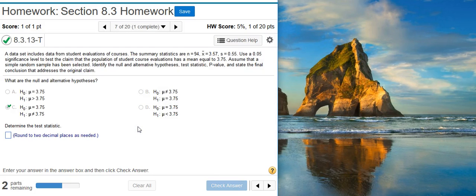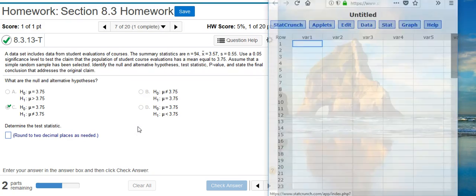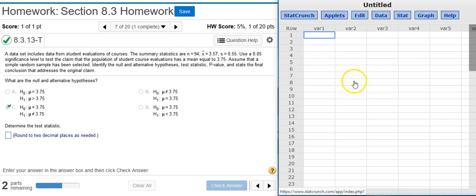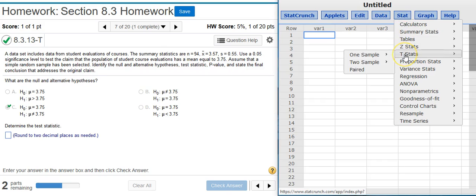Now the second part of the problem asks us to determine the test statistic. To do that, I'm going to pull up StatCrunch, because statistical software like StatCrunch makes hypothesis testing really easy. To get the test statistic, I'm first going to go into Stat, T-stats, because I don't know what the population standard deviation is. I do have a sample standard deviation, but not the population standard deviation. So that means I'm using a student T distribution. One sample, because I'm only given one sample. With summary, because I don't have actual data, just summary statistics.